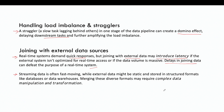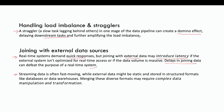Another challenge in stream processing is how to handle load imbalance and stragglers. A streaming application distributes processing across different nodes, and one node can be processing less data while another processes a large amount. We need to distribute data evenly between nodes so the load is balanced. A straggler is a slow task lagging behind the others, and that can create a domino effect by affecting downstream tasks.